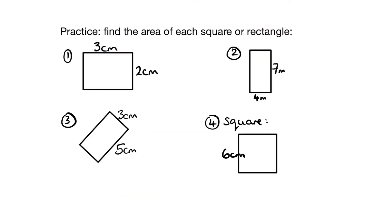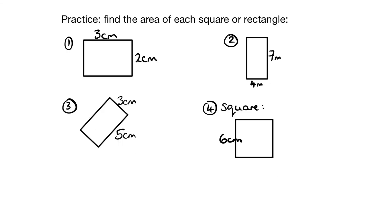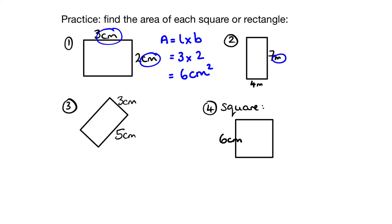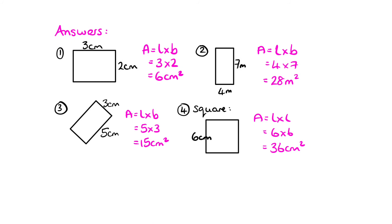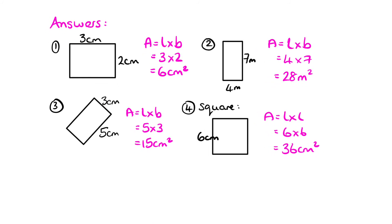Now we're going to go on and do a bit of practice at finding the area of squares and rectangles. Just these four to practise, and I want you to make sure that you write down the working. Pause the video again, and remember each time you write A equals L times B equals, then your numbers — three times two equals six square centimetres in this case, because we've got centimetres there. Watch out when you get to the last one because the units are metres. Pause the video, take a minute to write down your three lines of working for each of those. Here are your answers, so please make sure you've written them out correctly and you've got the correct answers.